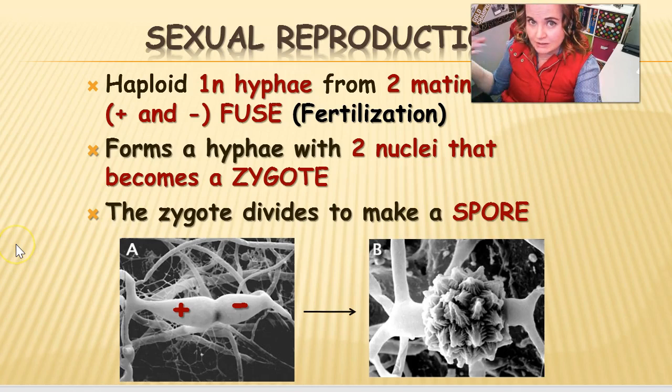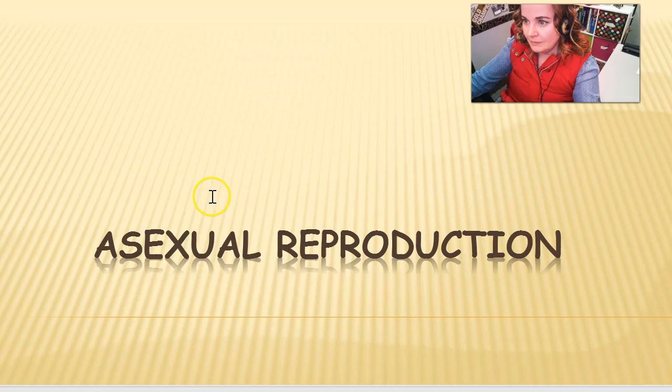This sexual spore may just sit around dormant for a while before it begins to grow into a brand new organism — growing more hyphae and a new mycelium from that zygote.